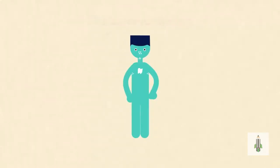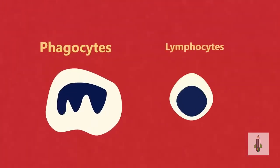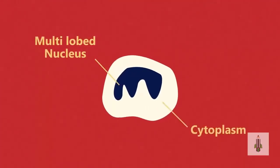There are two types of white blood cells: phagocytes and lymphocytes. Phagocytes have a multi-lobe nucleus within the cytoplasm.